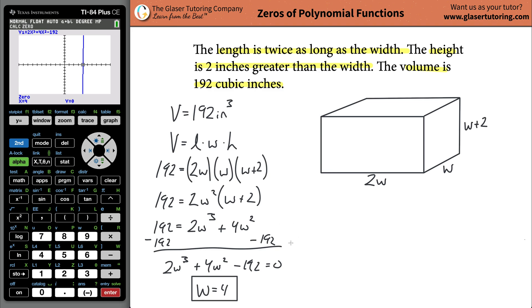If you don't have a calculator handy, the other way to do it, which is a lot longer, is to use the rational zero theorem. First, I'm going to reduce this. I realize I have a common factor of two in each of the terms, so that'll make our life easier. That's w cubed plus 2w squared minus 96.